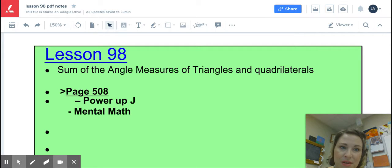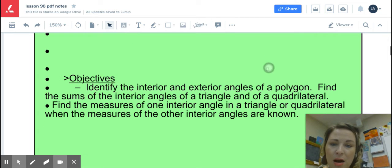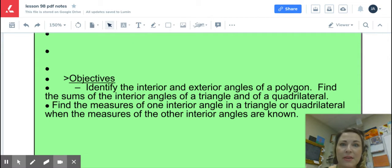So without further ado, I'm just going to give this a try and we'll get going. So this is lesson 98. The topic is the sum of the angle measures of triangles and quadrilaterals. Our learning targets for today are to identify the interior and exterior angles of polygons, finding the sums of interior angles of a triangle and of a quadrilateral, and then finding the measures of one interior angle in a triangle or quadrilateral when the measures of other angles are known.